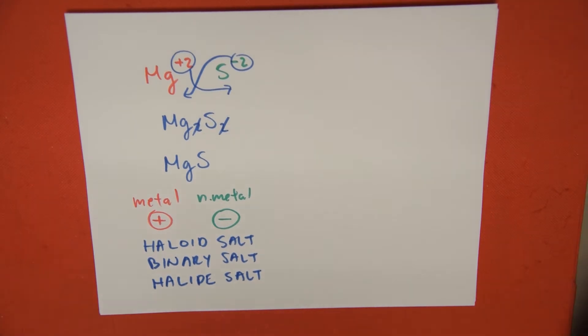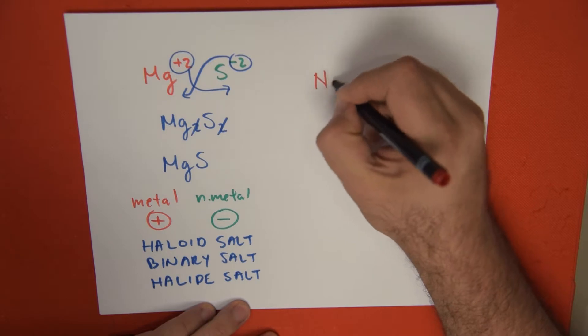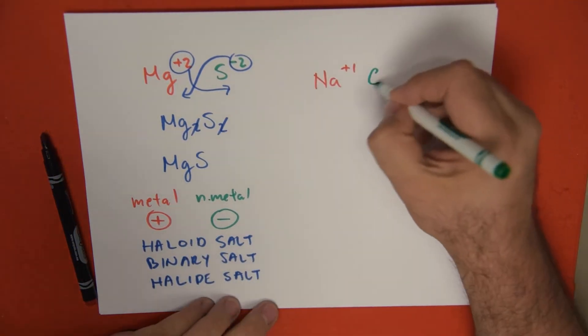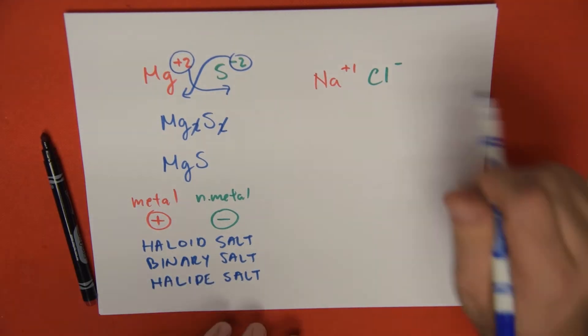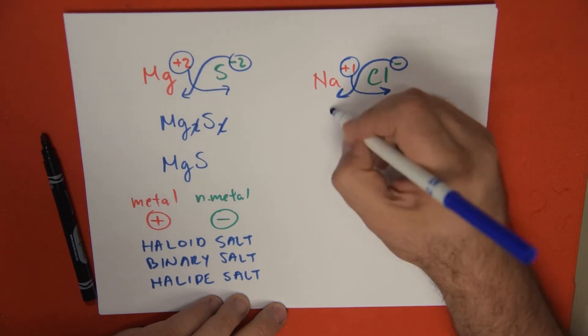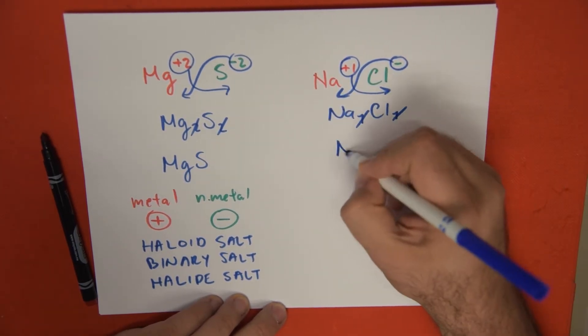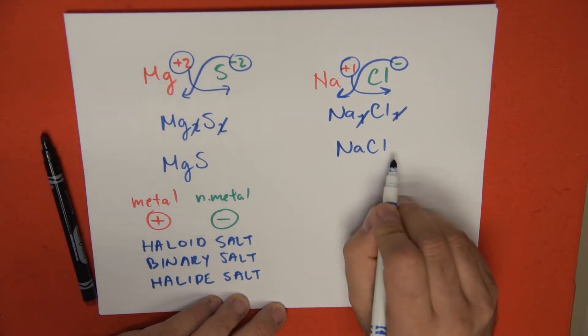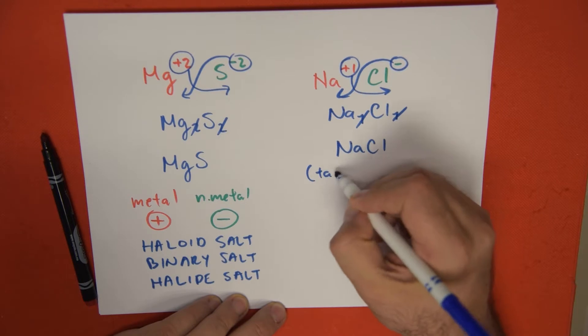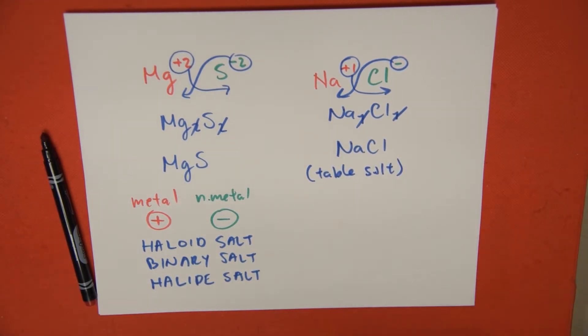So a quick example would be, let me try another one. We have a metal such as sodium, which has a +1 charge. We take a non-metal like chlorine, which is in the halogen family. We do our criss-cross. And once we do our criss-cross, we get Na1, Cl1, but the ones are not written, so we get NaCl, sodium chloride, which is basically table salt, the salt we use for our food. Table salt, and this is also a halide salt.